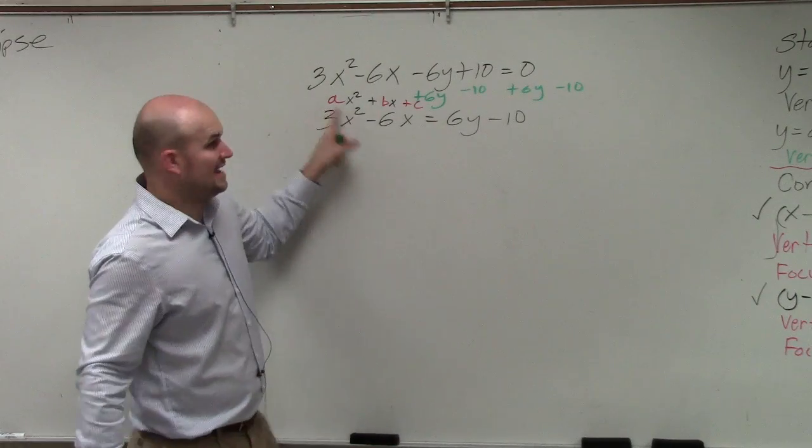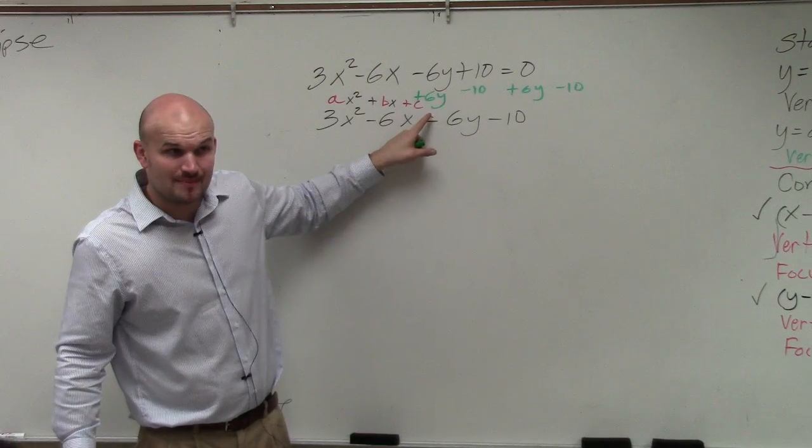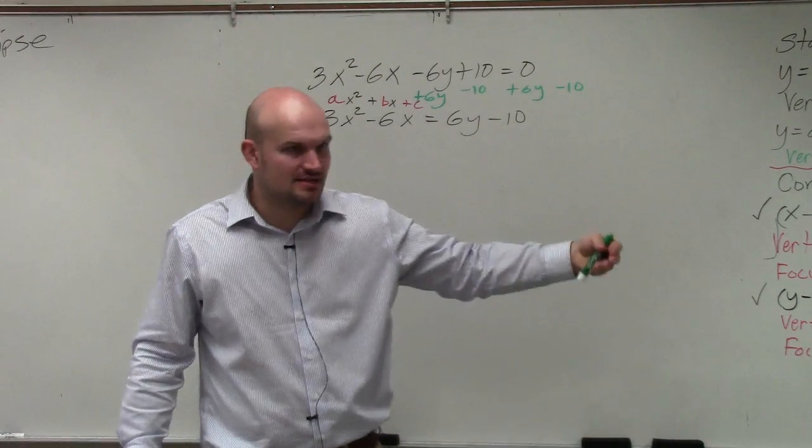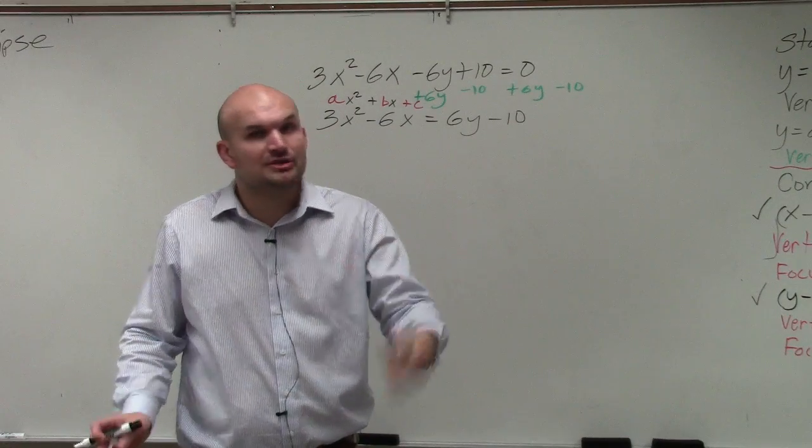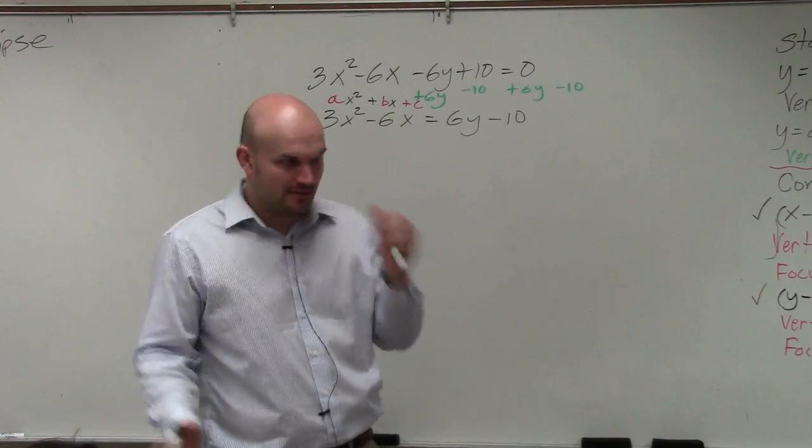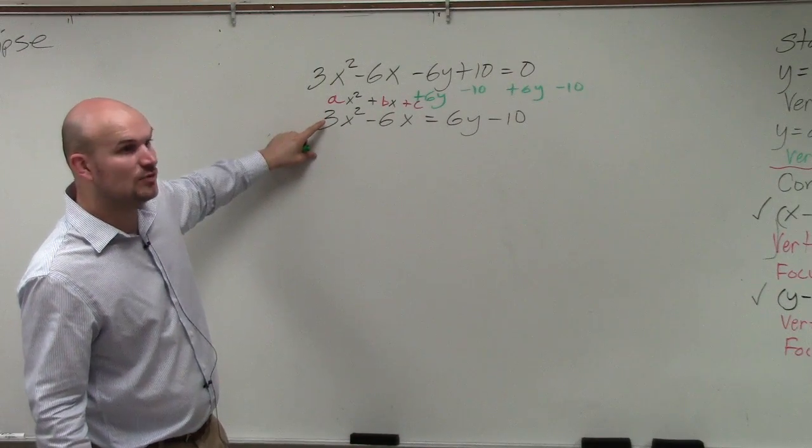We have an a, we have a b, but we don't have a c, do we? We don't have a c. So that's what completing the square does. Completing the square finds the value c that produces a perfect square trinomial. Now if you guys remember, we cannot complete the square though when a is not 1.